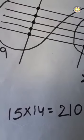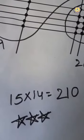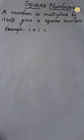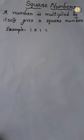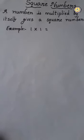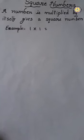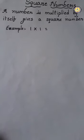So those who did correct, I am giving for them 3 stars. Next topic is square numbers. Square numbers means a number is multiplied by itself gives a square number. For example, 1 is multiplied by 1.